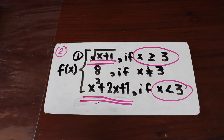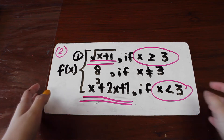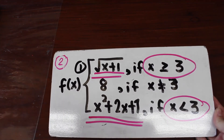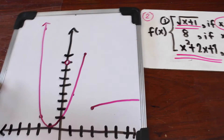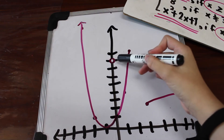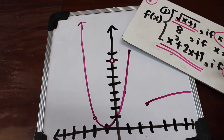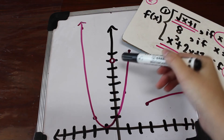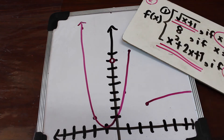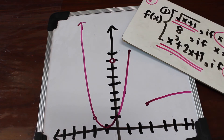To better illustrate this function as having a discontinuity, here is a graph of these functions. As you can see, there is a gap at the point, and that will be our discontinuity. This is called a hole discontinuity or a removable discontinuity.